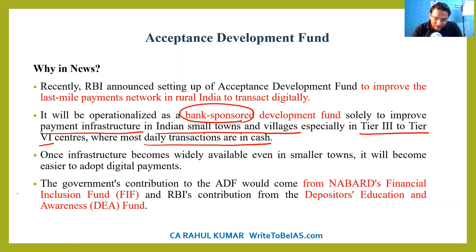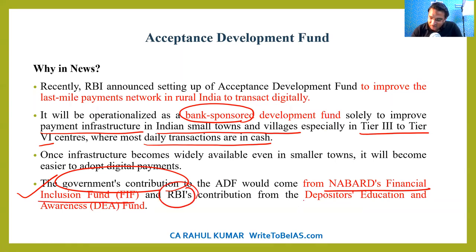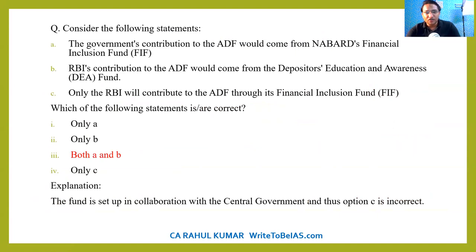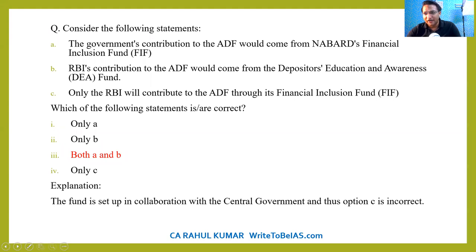Government's contribution will come from NABARD's Financial Inclusion Fund, and RBI's contribution will come from the Depositors Education and Investor Awareness Fund. The answer is option C — both A and B. This is a factual question, so don't worry if you gave the wrong answer — you are here to learn. I'm not expecting you to give all answers right. You have the leverage to give a wrong answer because here we are for learning.